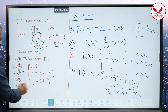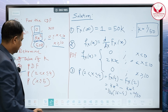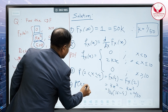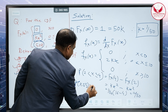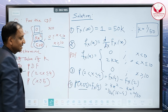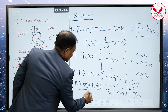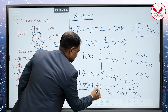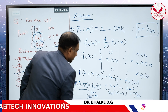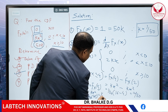The next question asks for the probability of random variable x less than or equal to 5. This is nothing but the CDF of 5, because 'less than or equal to' means it is the CDF. Since 5 is between 0 and 10, it is kx² where x equals 5, so this equals (1/50) × 25 = 25/50 = 1/2.